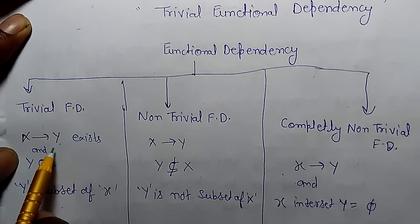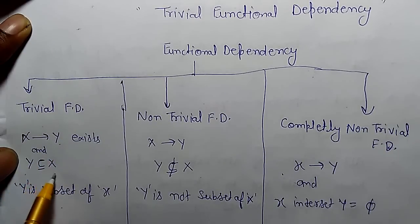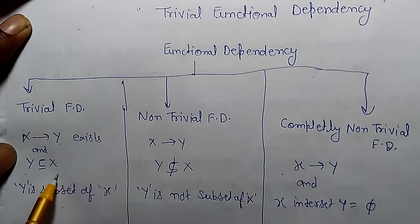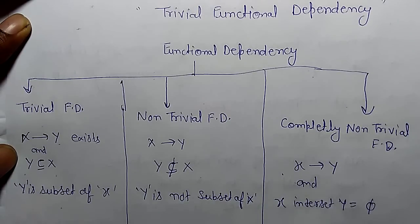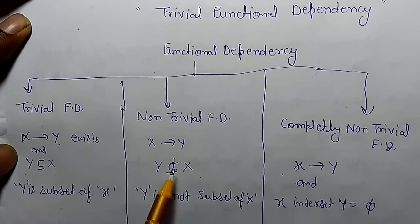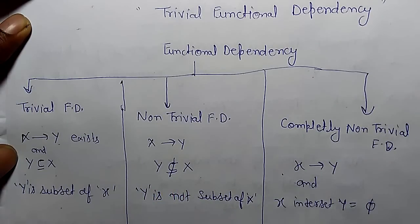If Y is a subset of X, then this type of dependency is known as trivial functional dependency. The second type is non-trivial functional dependency — if Y is not a subset of X, then this dependency is known as non-trivial functional dependency.